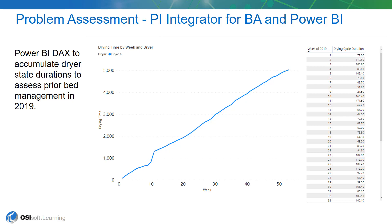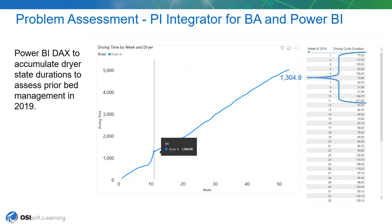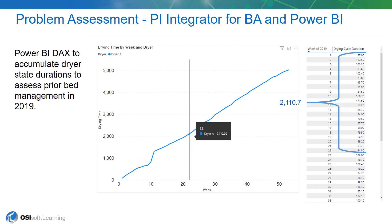The Power BI report utilizes a data analysis expression, or DAX, to allow us to plot cumulative dryer utilization as a function of weekly progression for the entire year's worth of data that we have. Power BI is well suited to readily allow us to perform this sort of plotting and analysis, which is another reason why we are using Power BI at this point in the lab. These plots would be possible, but much more difficult to make in a tool like Excel.